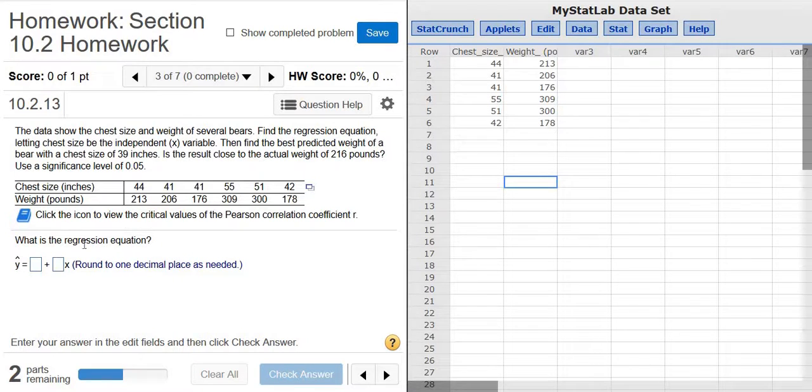In this problem, we're going to find the regression equation. We're given some information. We have the chest size and then we have the weight in pounds, and it looks like we're talking about bears. So this is the chest size of a bear in inches, and this is the weight in pounds.